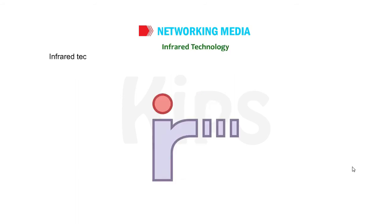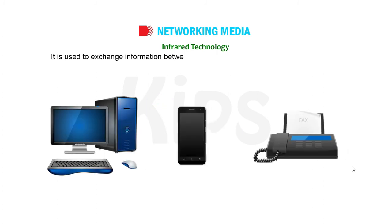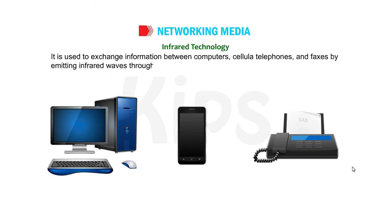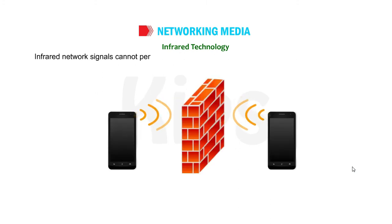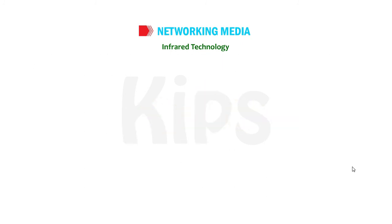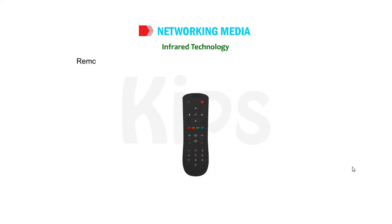Infrared Technology is a short-range communication technology that covers approximately 5 meters of distance. It is used to exchange information between computers, cellular telephones and faxes by emitting infrared waves through infrared LEDs. Infrared communication takes place between two devices at a time. Infrared network signals cannot penetrate walls or other obstructions and work only in a direct line of sight. These waves of signals are focused into a narrow beam through a plastic lens, which is further converted into electronic signals by the receiver. Remote control is the most common example of infrared communication.